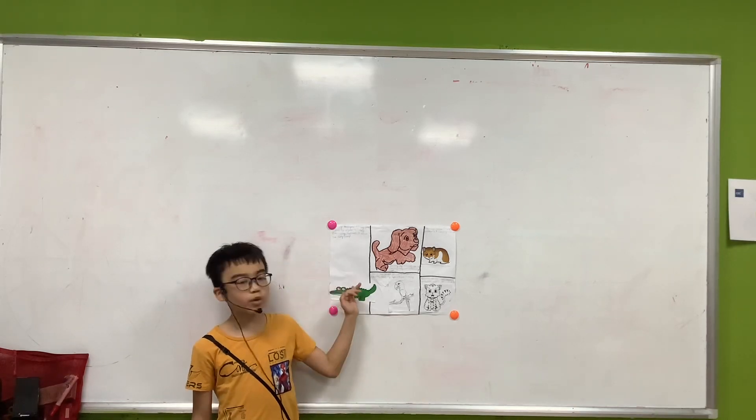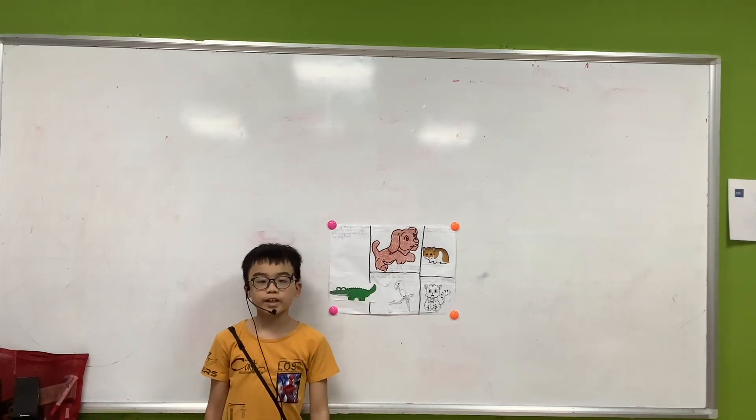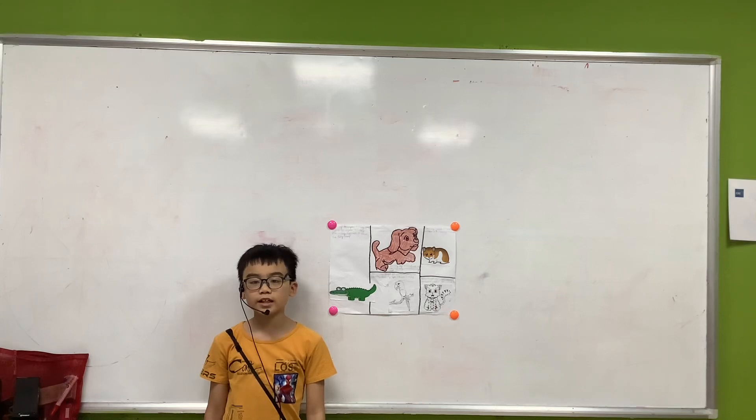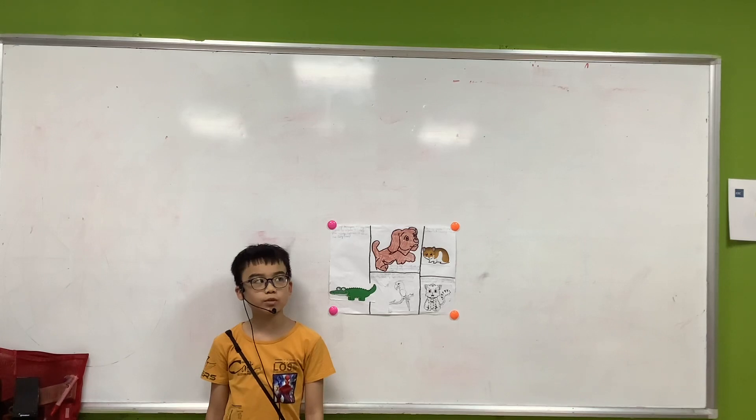The last animal is the alligator. It's green and lives in the reptile group. It lives in a dirty swamp.